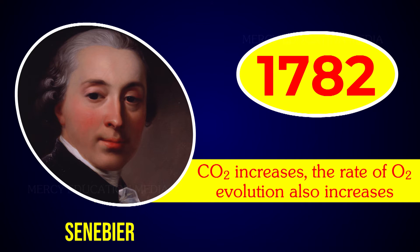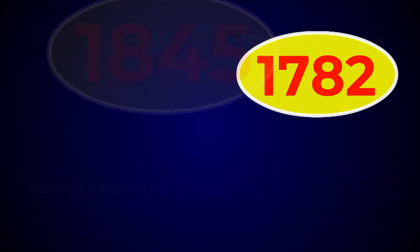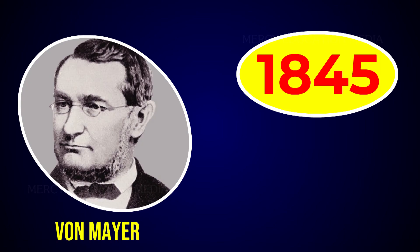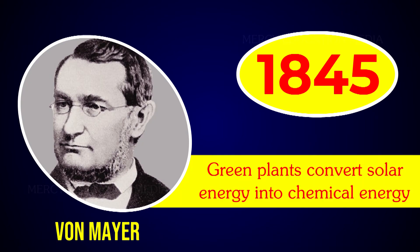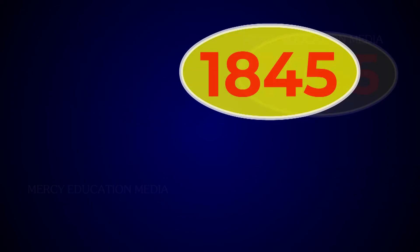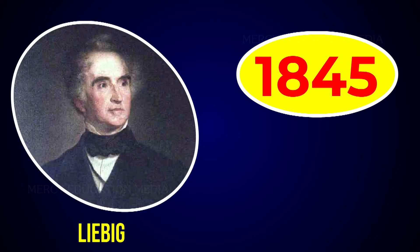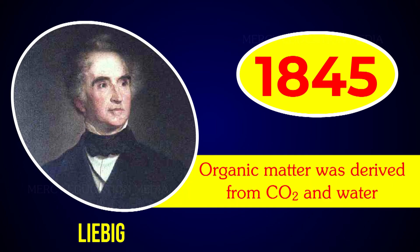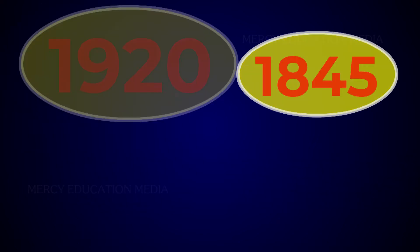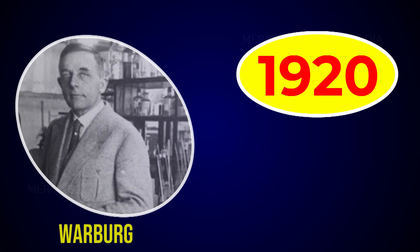In 1845, von Mayer recognized that green plants convert solar energy into chemical energy of organic matter. Also in 1845, Liebig pointed out that the organic matter was derived from carbon dioxide and water.